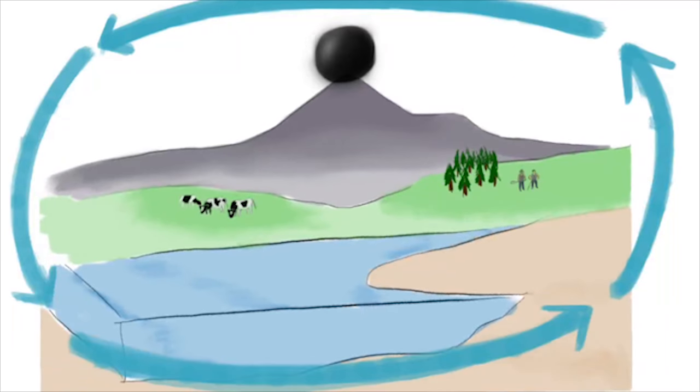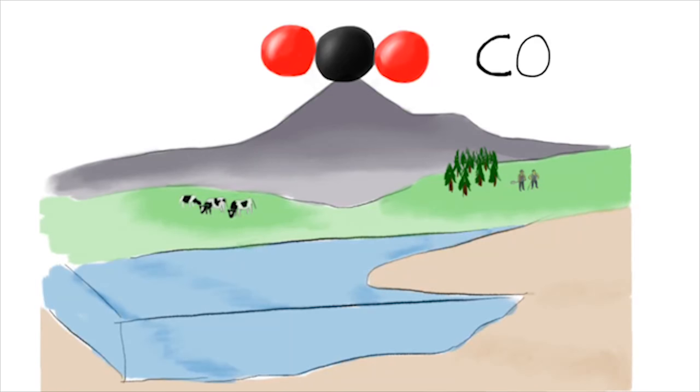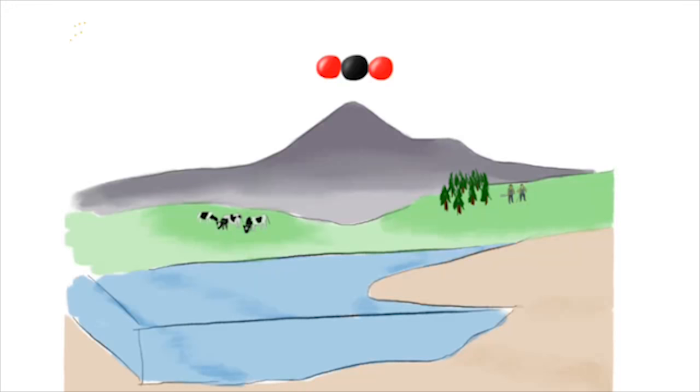When in the atmosphere, carbon takes the form of carbon dioxide. Carbon dioxide has the ability to absorb energy in the form of infrared radiation, and to shortly thereafter, disperse that same energy in a random direction.